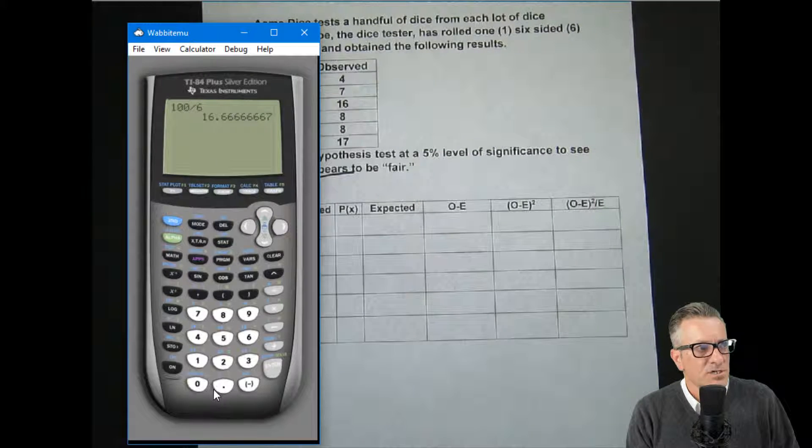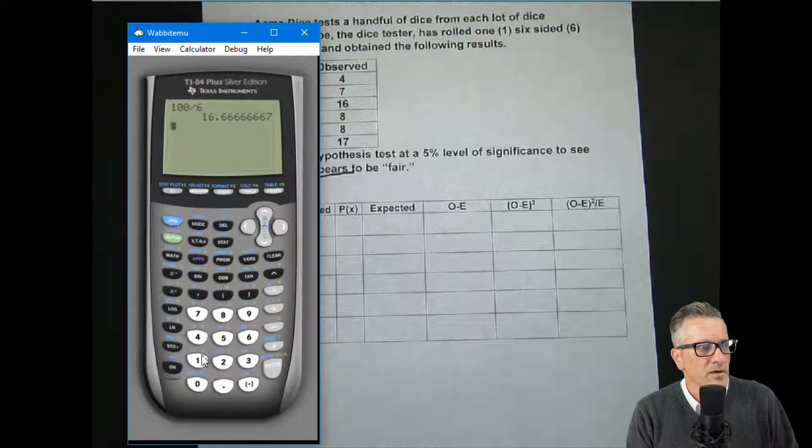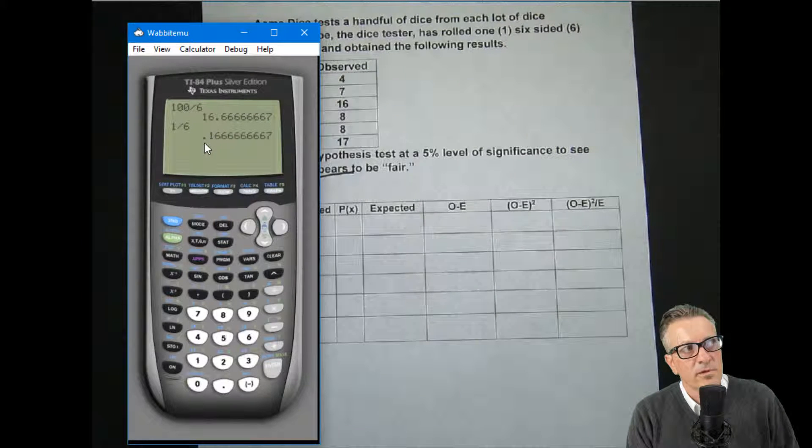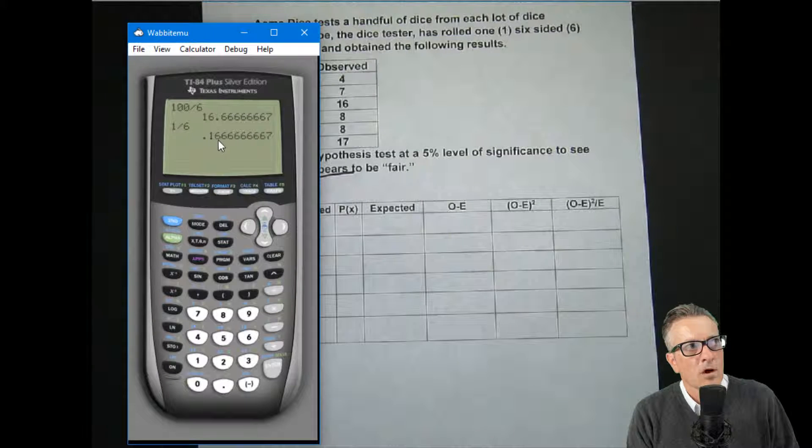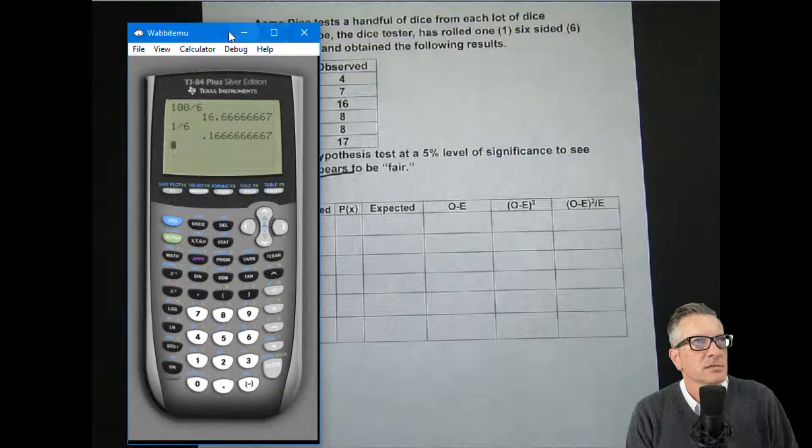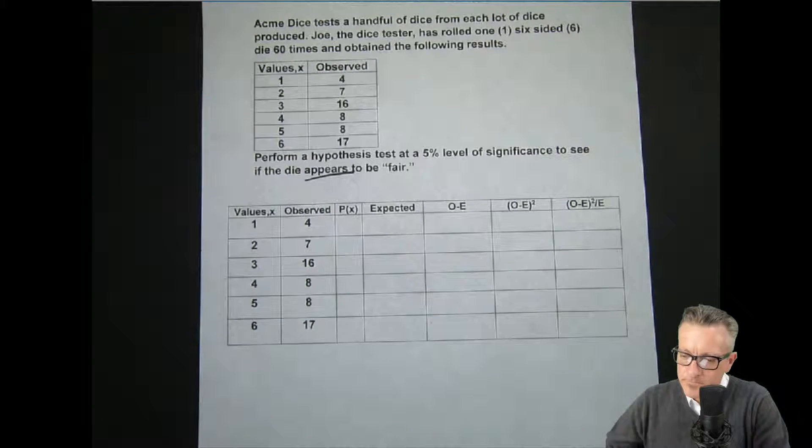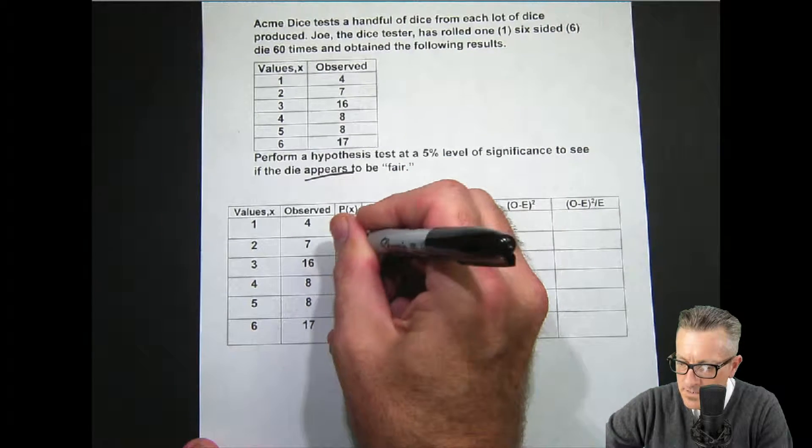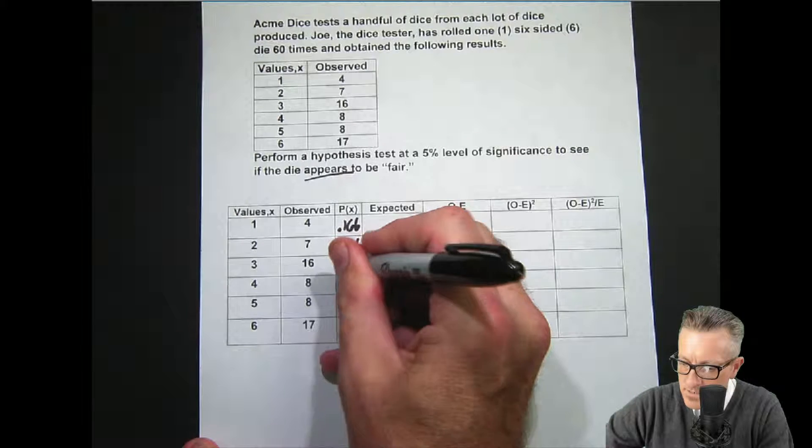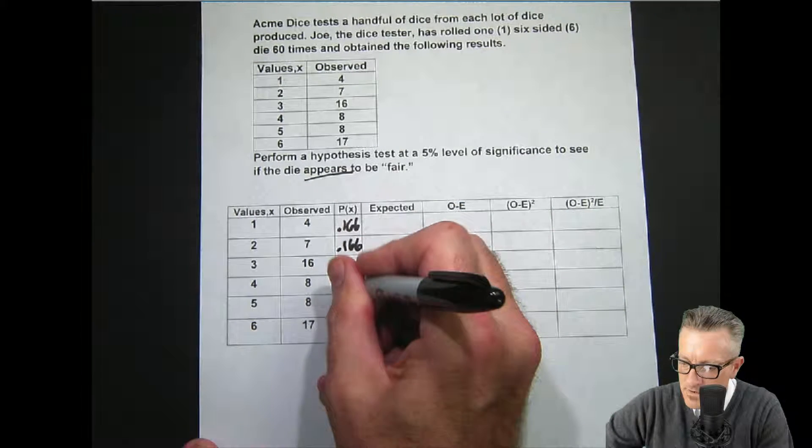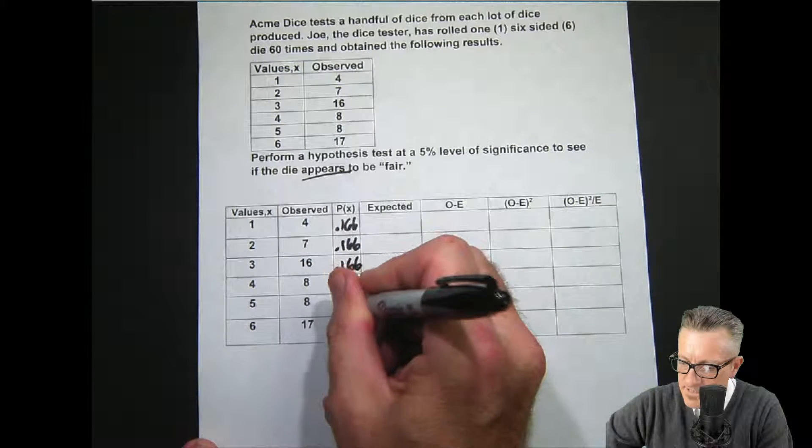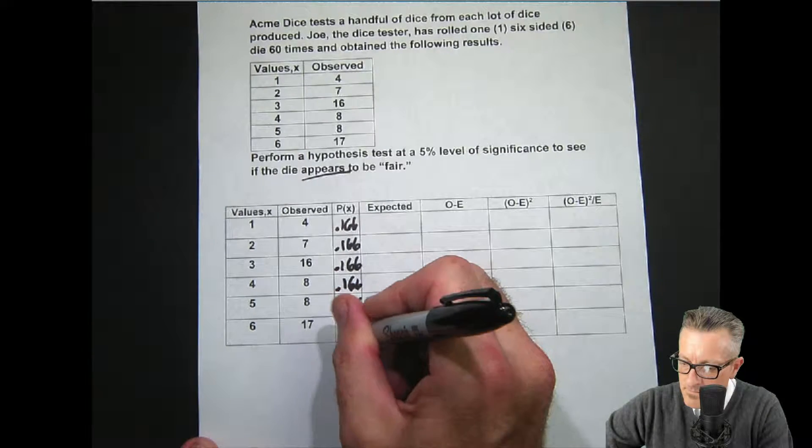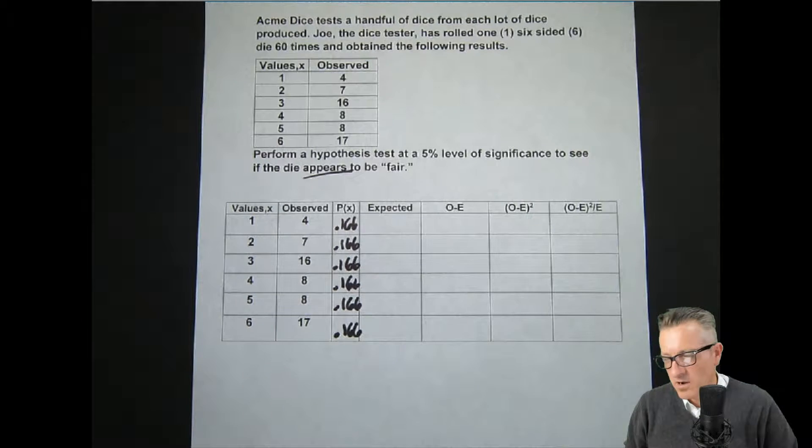If we want to put this as a percentage, which probability usually is, we would do one divided by six. And our probability is, for each side, 0.166, or about 16%. So, 0.166 for each outcome. And it's the same for all of them. That's one of the characteristics, one of the nice things about this type of problem is they're all the same.